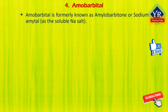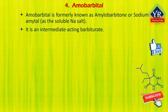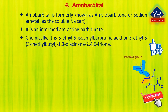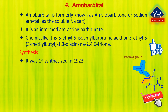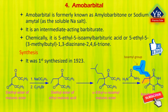The fourth drug is amobarbital, formerly known as amylobarbitone or sodium amytal as the soluble sodium salt. It is an intermediate-acting barbiturate, chemically 5-ethyl-5-isoamyl barbituric acid or 5-ethyl-5-(3-methylbutyl)-1,3-diazinane-2,4,6-trione. Amobarbital was first synthesized in Germany in 1923. It is synthesized by the interaction of diethyl malonate ester with ethyl bromide in the presence of sodium ethoxide to form diethyl ester of ethyl malonic acid. Treatment with 1-bromo-3-methylbutane yields alpha-ethyl-alpha-isoamyl malonic ester, which on condensation with urea gives amobarbital.